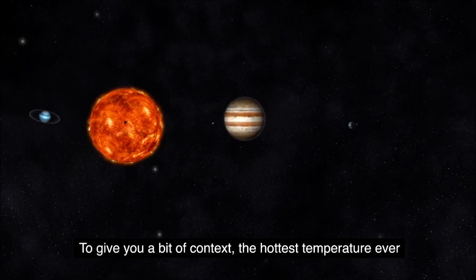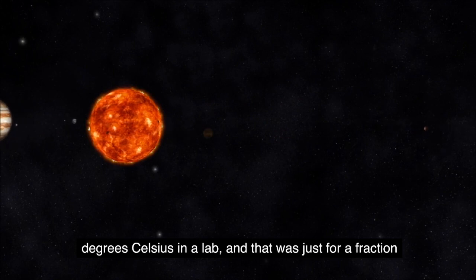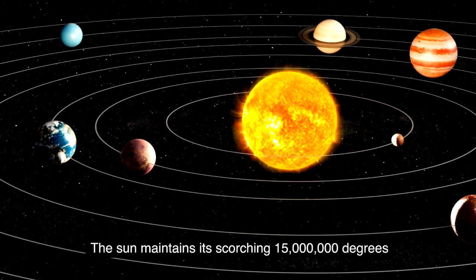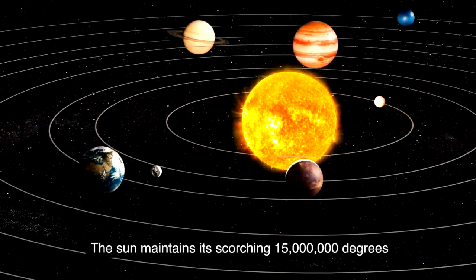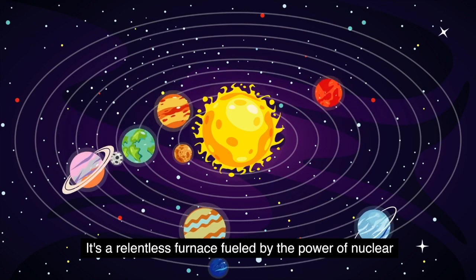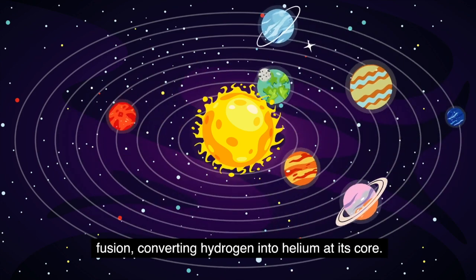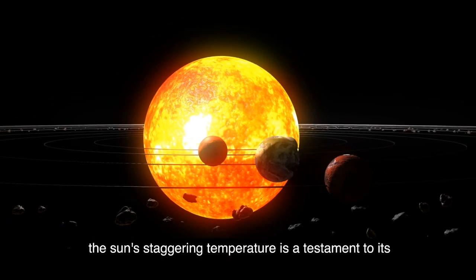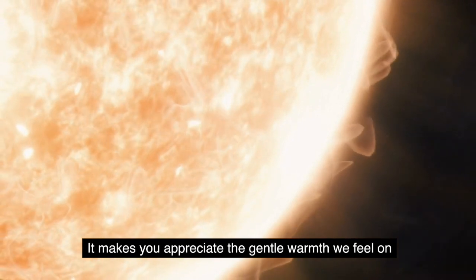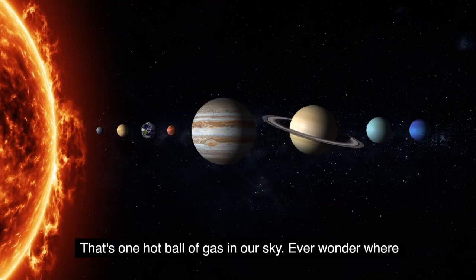To give you a bit of context, the hottest temperature ever created by humans on Earth was a mere 4 billion degrees Celsius in a lab, and that was just for a fraction of a second. The sun maintains its scorching 15 million degrees round the clock every day of the year. It's a relentless furnace, fueled by the power of nuclear fusion, converting hydrogen into helium at its core. The sun's staggering temperature is a testament to its raw power and energy. It makes you appreciate the gentle warmth we feel on Earth from 93 million miles away. That's one hot ball of gas in our sky.